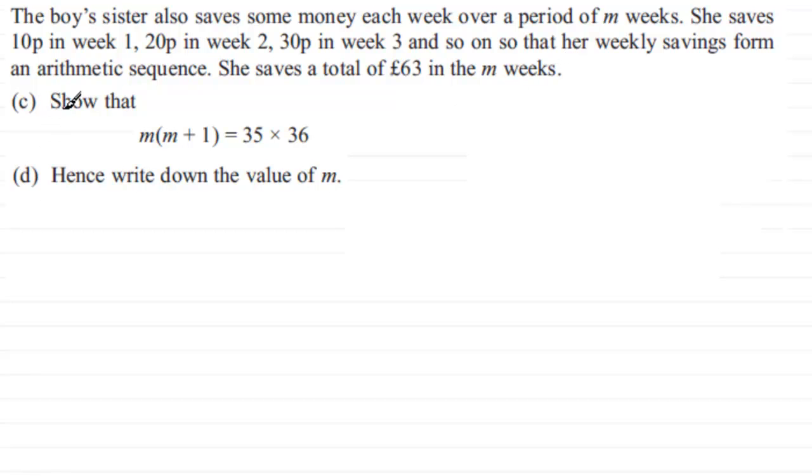We've got two parts here. First of all, we've got to show that m times (m+1) equals 35 times 36, and then we've got to write down the value of m. So how do we go about this question?